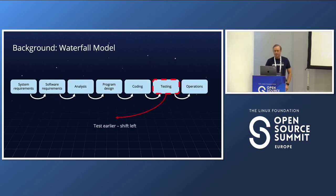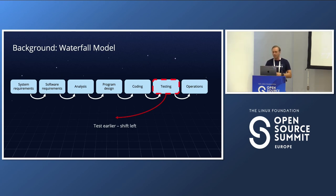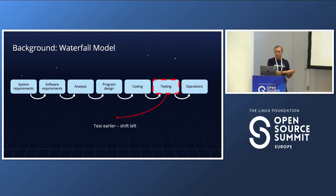Just a little background. If we go back a few decades, the waterfall model for software development was very popular. We use a variant of it today — much more rapid, doing things in cycles. Basically, we started with system requirements, did analysis, design, coding, testing, then operation and maintenance.